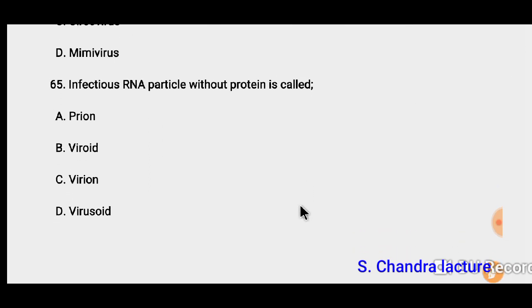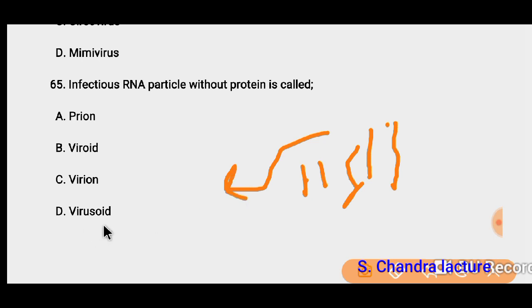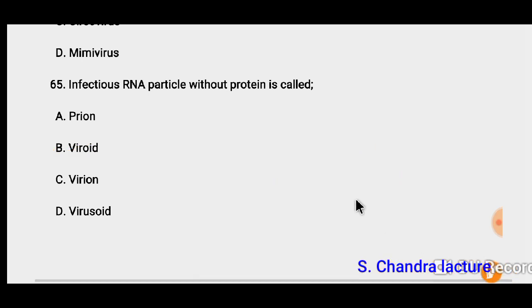Question 65: Infectious RNA particle without protein is called a viroid. These RNA particles have no protein attached but they are infectious and can cause infection.